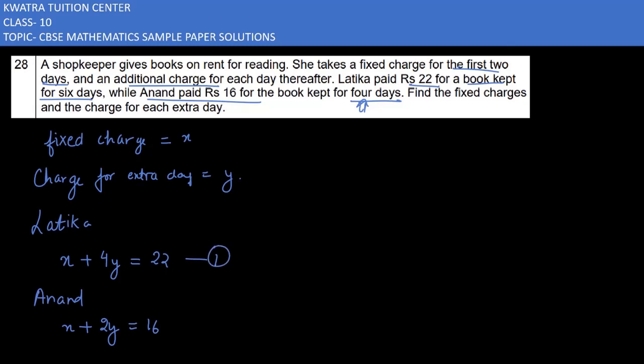Next, you can subtract them. We can use the elimination method. You have to eliminate either x or y. When x and x cancel, we get zero. 4y minus 2y will be 2y, and 22 minus 16 will be 6. So 2y equals 6.